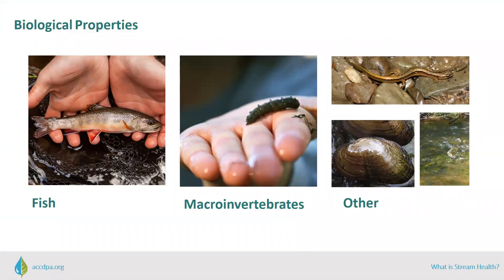In wadeable streams, the three most common biological organisms studied are fish, algae, and macroinvertebrates. But other organisms such as amphibians and freshwater mussels can also indicate good stream health. Because populations of fish and aquatic insects respond to changes in stream quality and water quantity, determinations of their diversity and abundance are indicators of stream health. Streams of poor quality support only a few species of organisms that can tolerate conditions such as low dissolved oxygen. In contrast, healthy streams support diverse populations of organisms with specific requirements such as high dissolved oxygen and low temperature, like the brook trout in the picture.